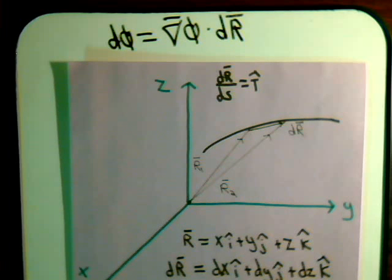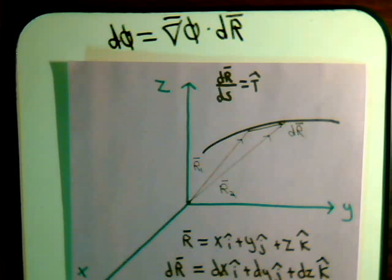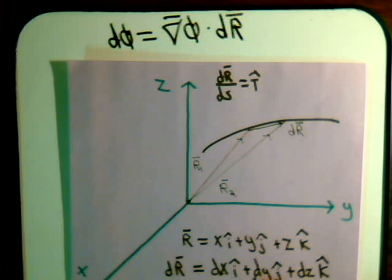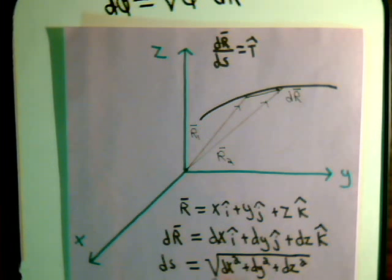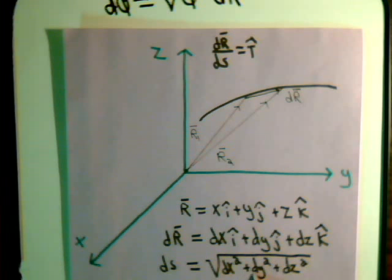And in fact, this has a magnitude that is equal to a differential arc length element. We can show that pretty quickly here, it's pretty straightforward. Let's say we're in three-dimensional space. This is the equation for a position vector in three dimensions. So the differential displacement of it would be DX i plus DY j plus DZ k. Now in three dimensions, a differential arc length is the square root of DX squared plus DY squared plus DZ squared.